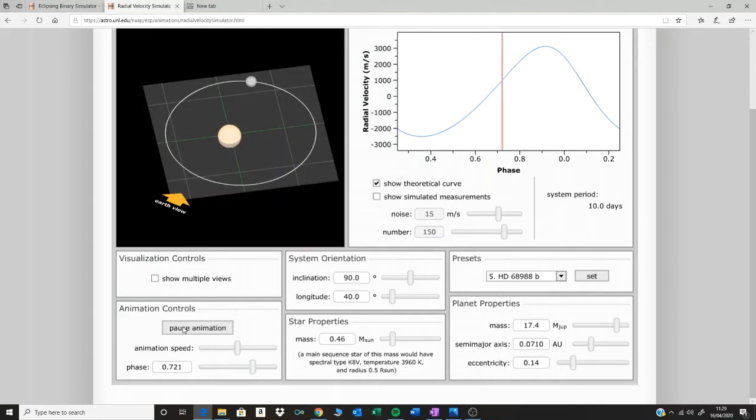Move the animation on a bit. We get to here. Here the planet's coming towards us, so the star's moving away. You can see that over here in the graph as well. So all the absorption lines will now be red shifted, and we know that the star is moving away from us.